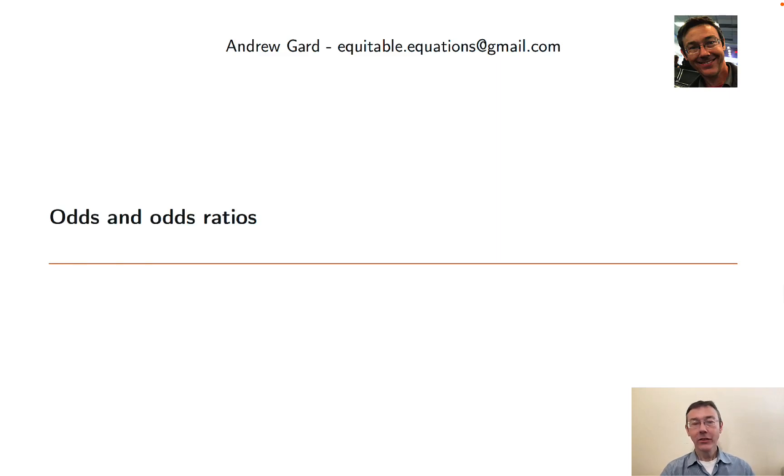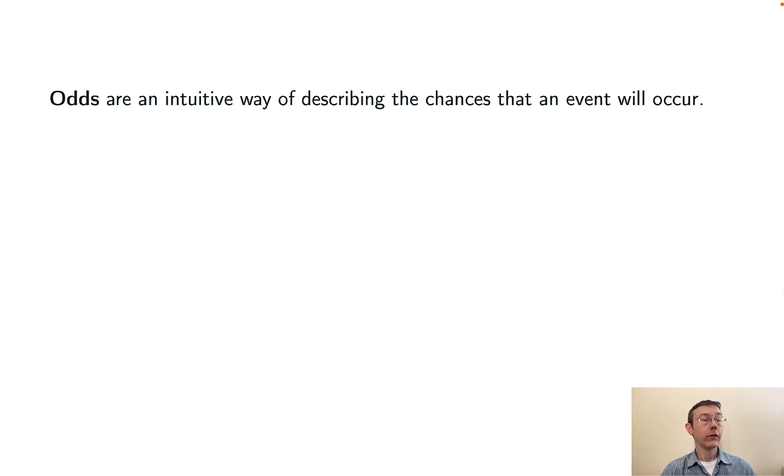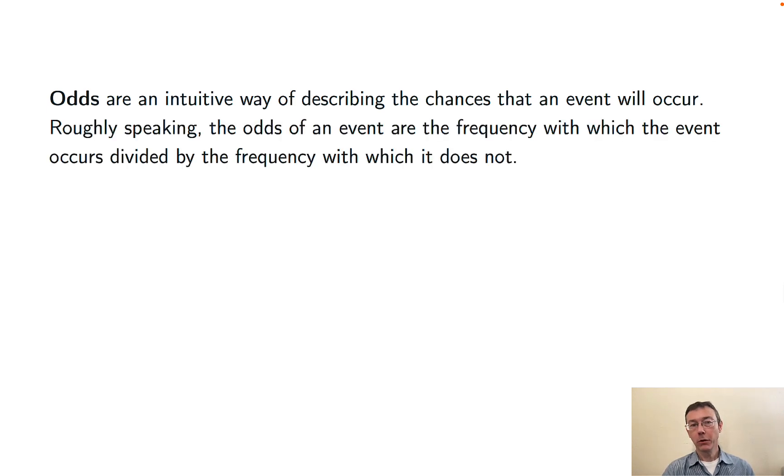Hey everybody. Today we're talking about odds and odds ratios. Odds are just an intuitive way of describing the chances that an event will occur. Roughly speaking, the odds of an event are the frequency with which the event occurs divided by the frequency with which it does not occur.